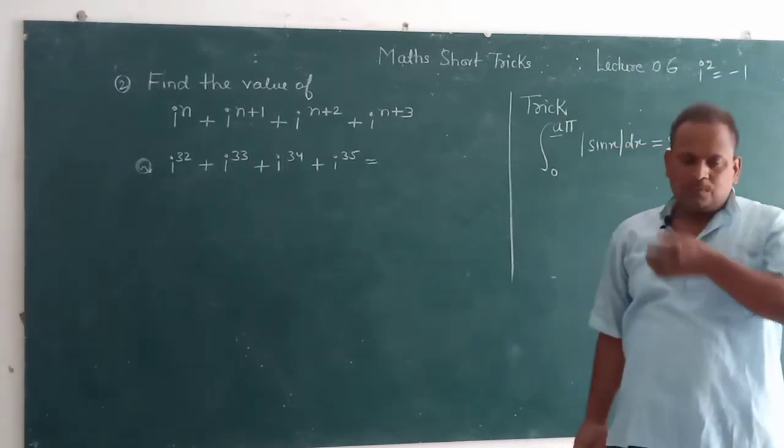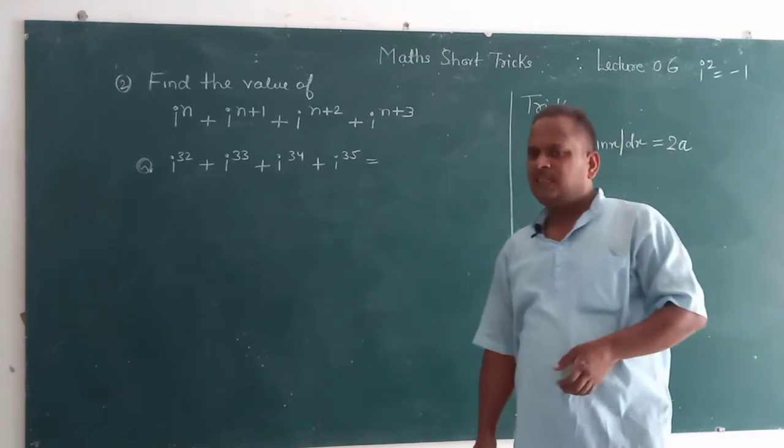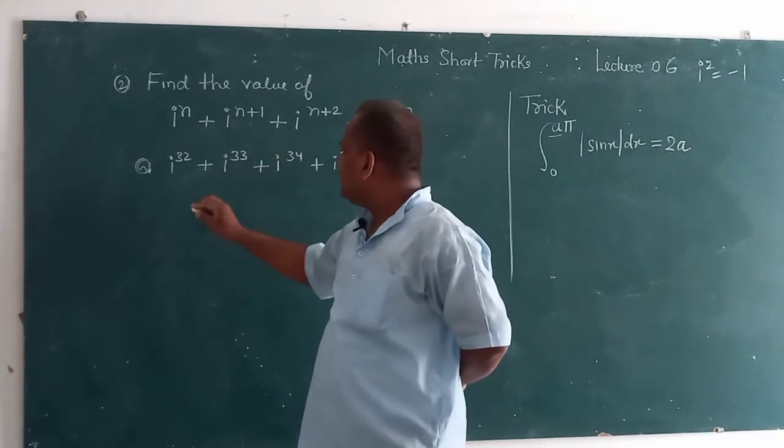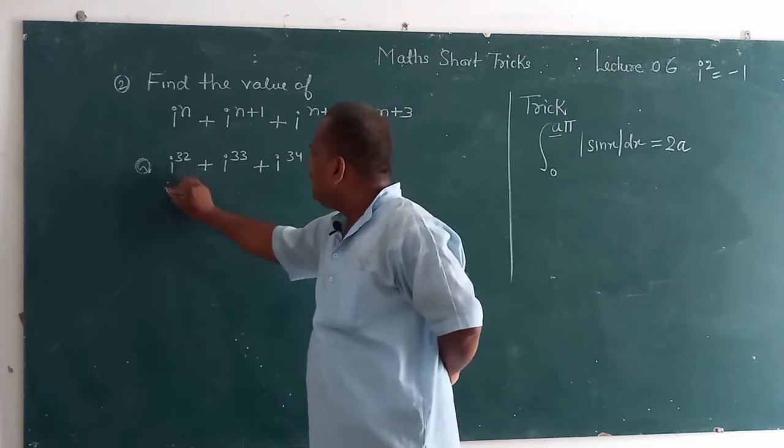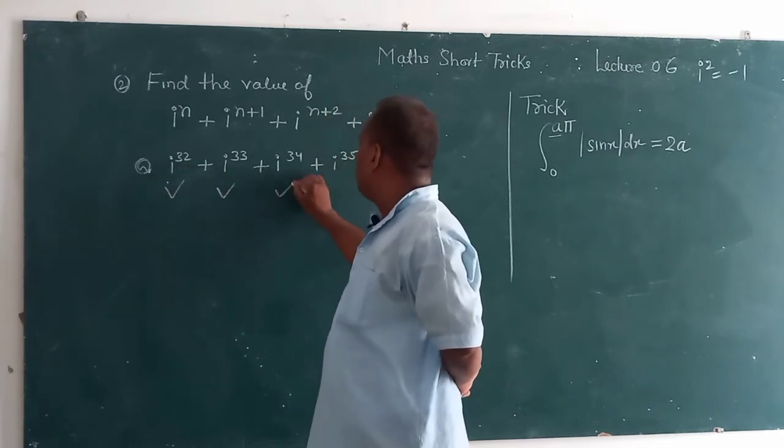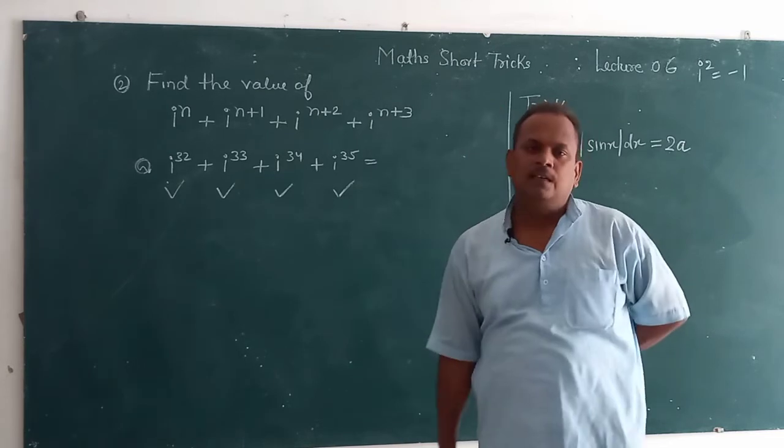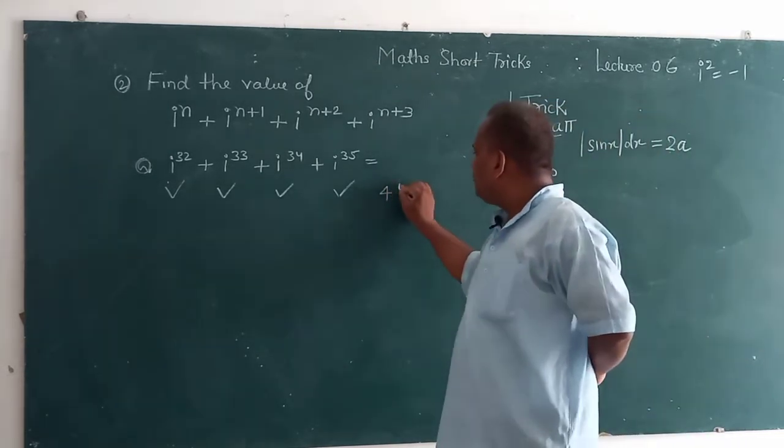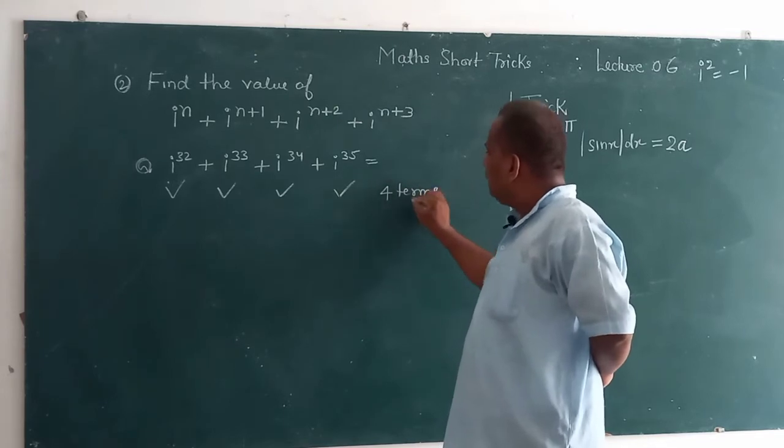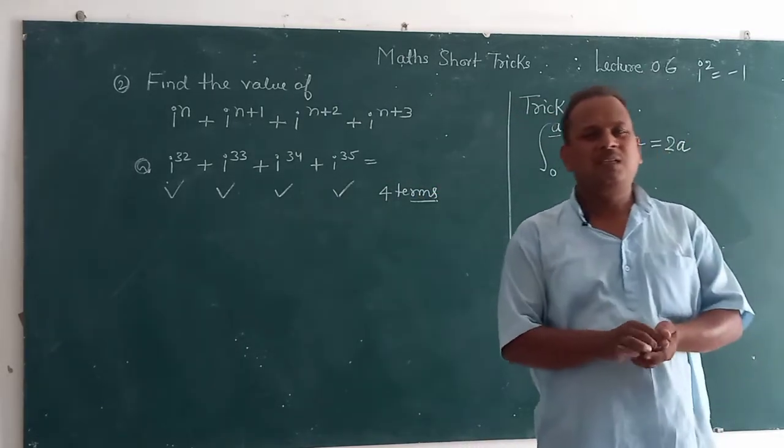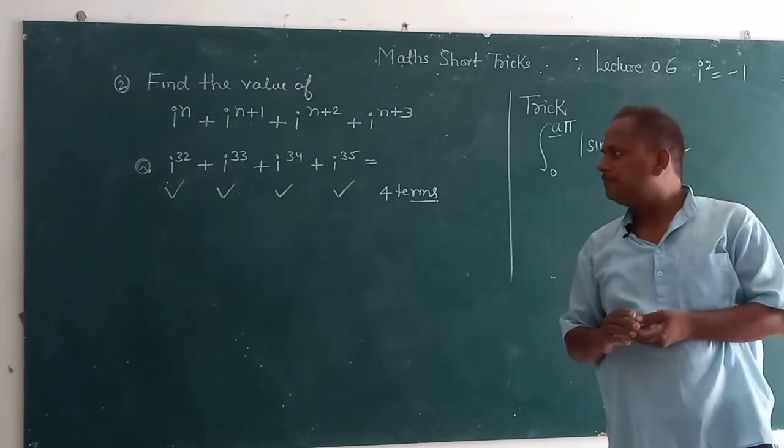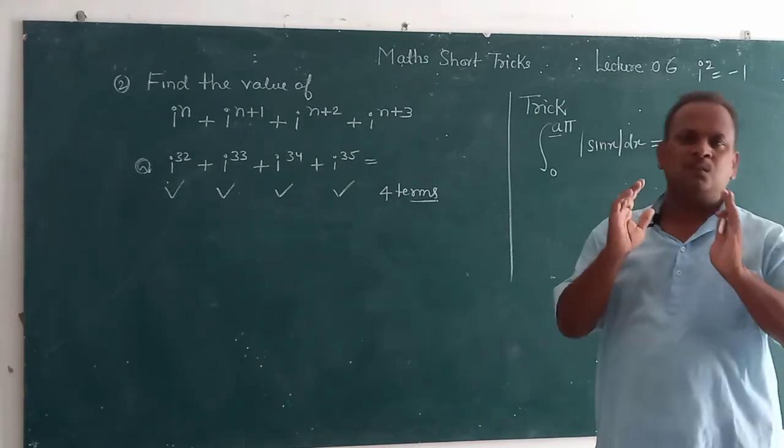This question is the best way to answer. First we have to see how many terms i, how many terms there are. Four terms? Five terms? Not, there are five terms. Five terms in the question, four terms in the solution.